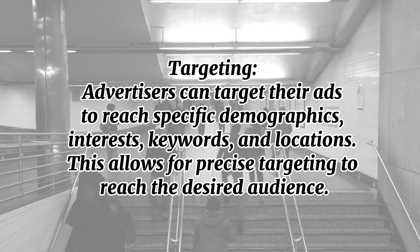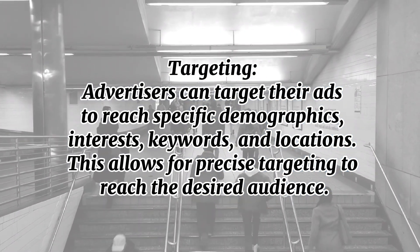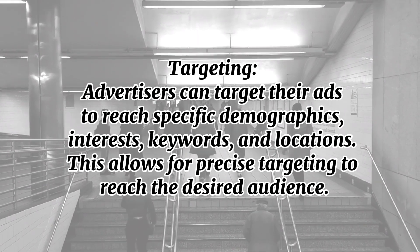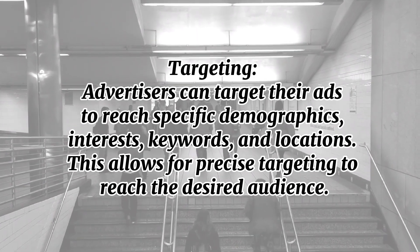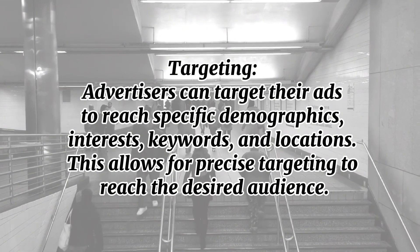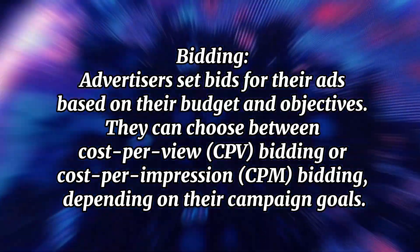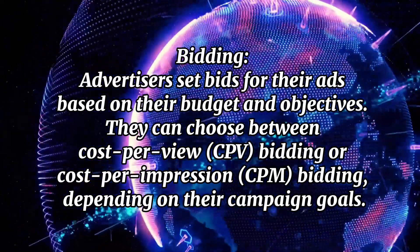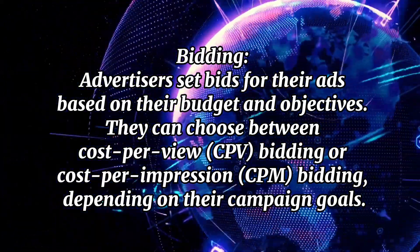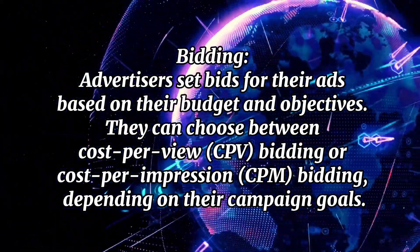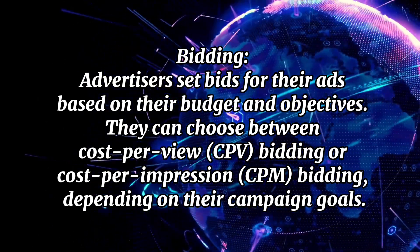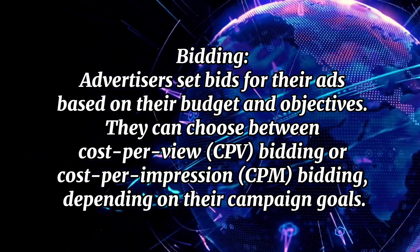Targeting: advertisers can target their ads to reach specific demographics, interests, keywords, and locations. This allows for precise targeting to reach the desired audience. Bidding: advertisers set bids for their ads based on their budget and objectives. They can choose between cost-per-view bidding or cost-per-impression bidding depending on their campaign goals.